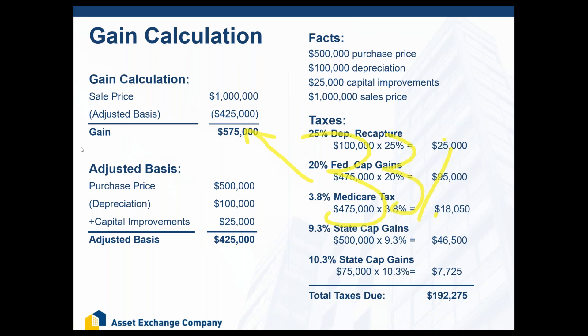We always tell people about 33% is going to go to the government. When you break it down with a fine-toothed comb, you've got to look at each individual tax rate and your CPA can crunch those numbers for you. But if you're looking at the big picture, use an estimate of about 33%.